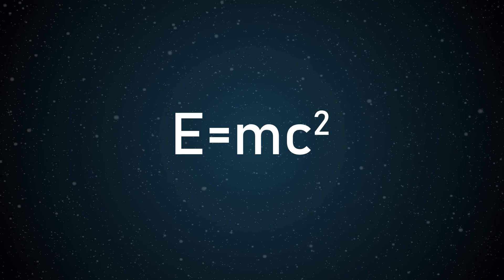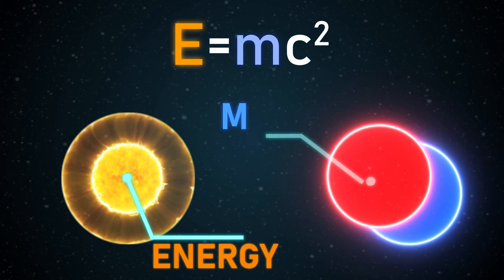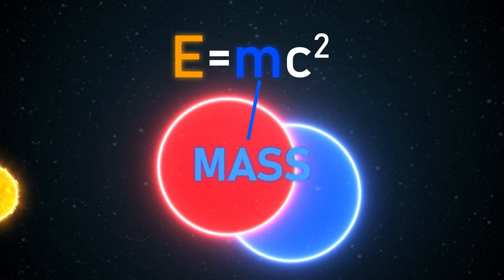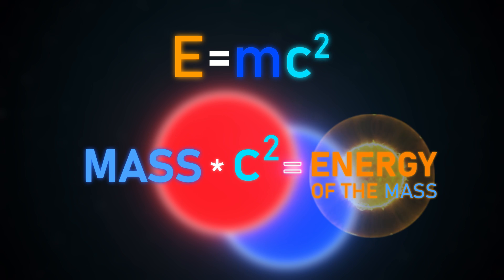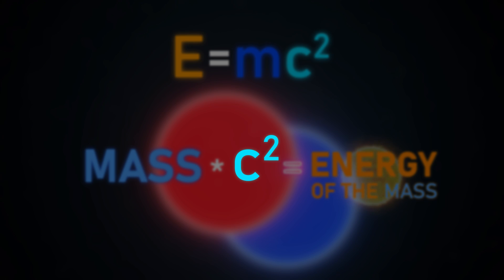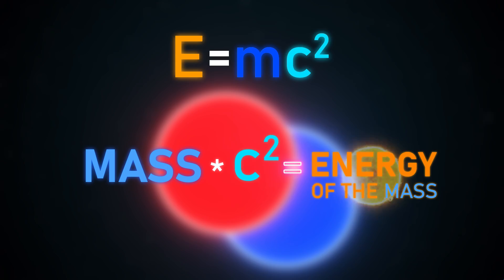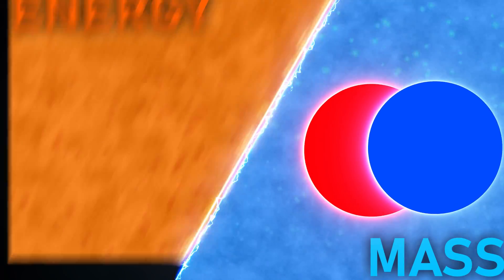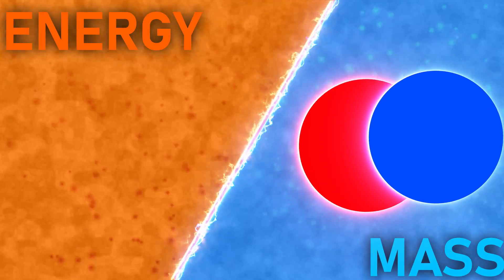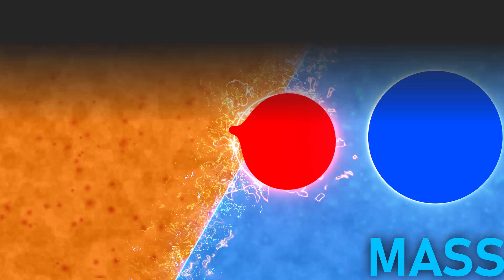E equals mc squared describes the relationship between energy and mass. It essentially states that mass times the speed of light squared is equal to its energy. The speed of light squared is absolutely huge, meaning that if we could convert even a small amount of mass into energy, we would get a ton of energy.